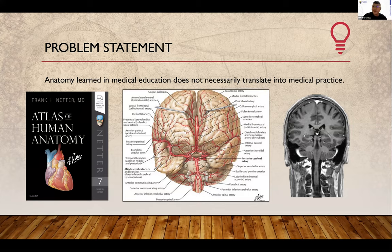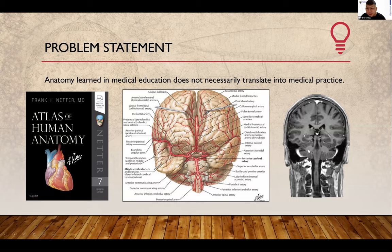Anatomy in medical education does not necessarily translate well into medical practice. For example, if you are a medical student, you will definitely have the Atlas of Human Anatomy textbook, which draws out the anatomy. But then you come to practice and look at an MRI of the brain — it doesn't look anything like the drawings. Sometimes it doesn't translate well, and because we have different modalities like CT and MRI, they all look slightly different from each other.